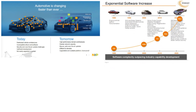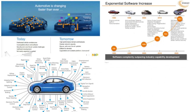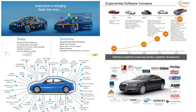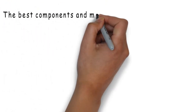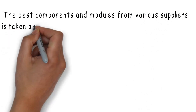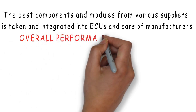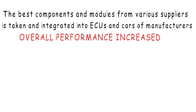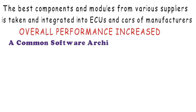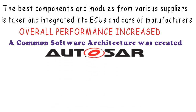The complexity of automotive systems is increasing day by day. So all manufacturers and suppliers of the automotive industry come together and work at improving the capacity of the car. The best components from various companies must be taken and integrated in car and ECUs so that the overall performance is increased. So a common architecture for ECUs was created by a group of leading players in the automotive industry, which is called AutoSAR.